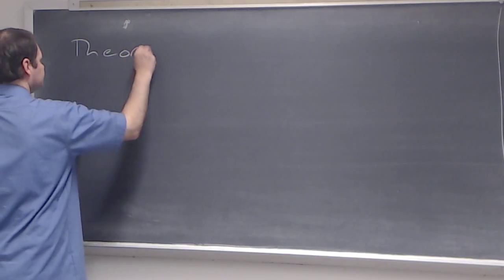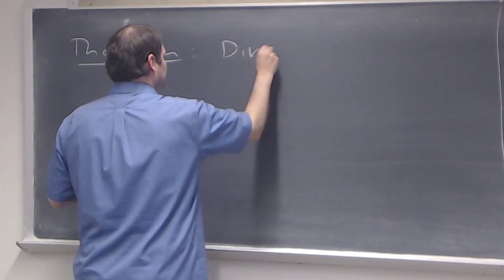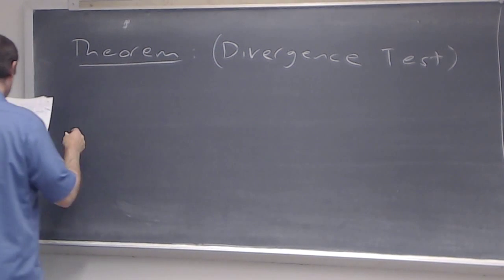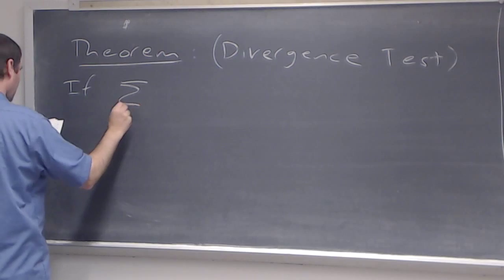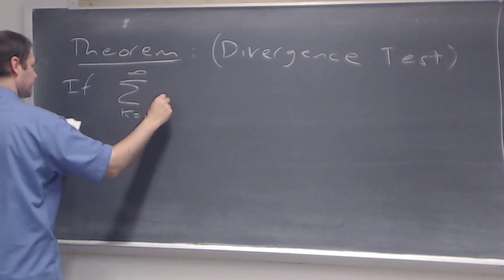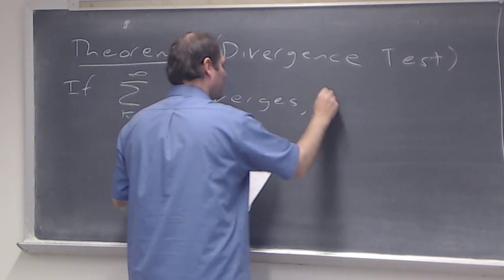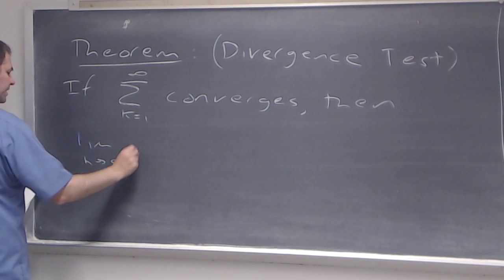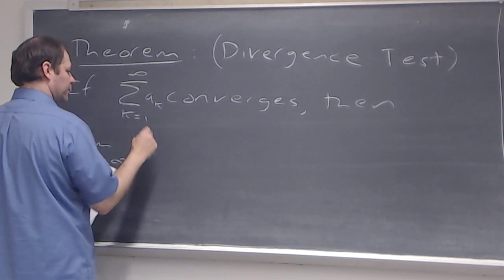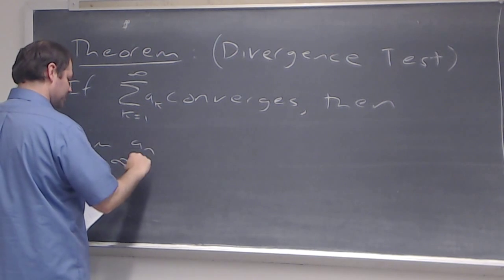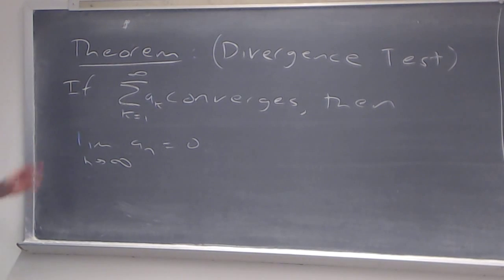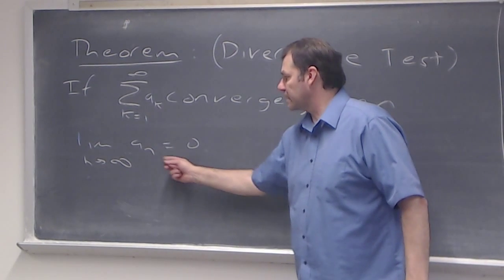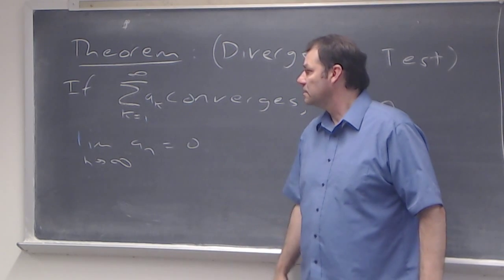Here's the statement. It's called the divergence test. What it says is that if the sum as k runs from 1 to infinity of a sub k converges, then the limit as n goes to infinity of a sub n must be equal to zero. We call it the divergence test because if this limit of the sequence involved is not zero, then this series cannot converge.